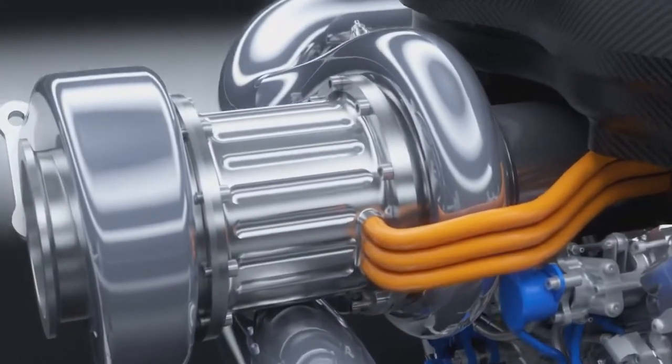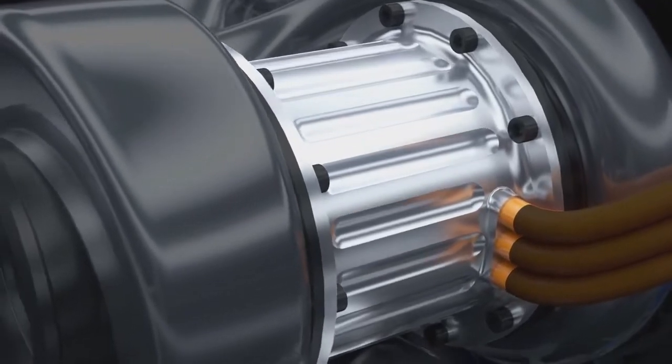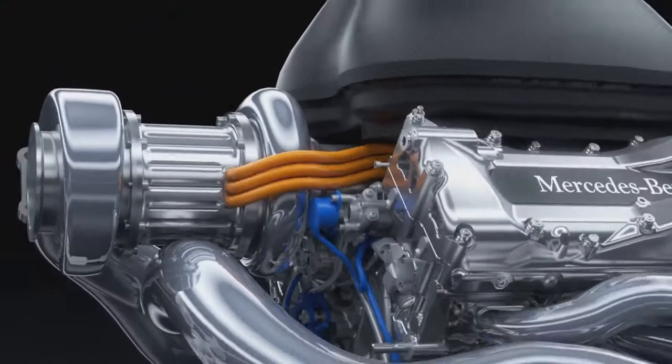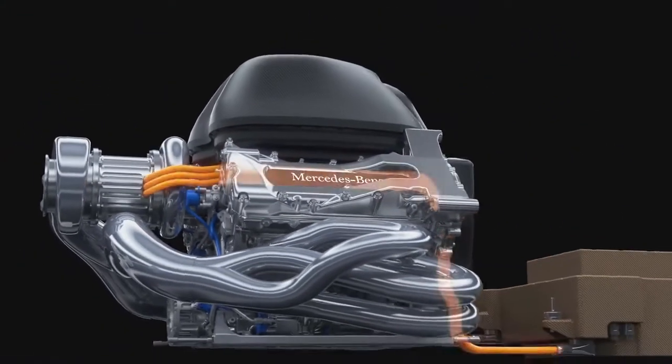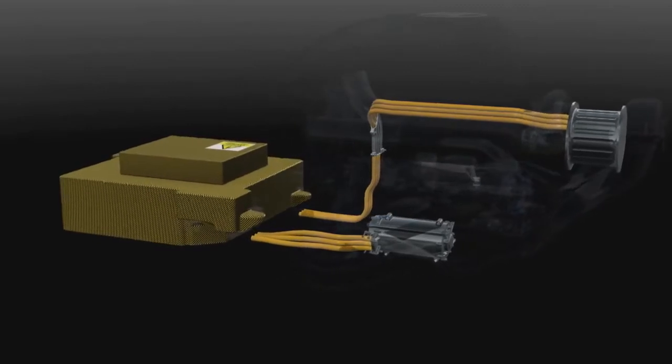The second motor generator unit, the MGU-H, harvests the turbo energy. As a motor, it spins up the compressor to eliminate turbo lag, but it can also send energy directly to the other electric machine and vice versa for maximum efficiency.